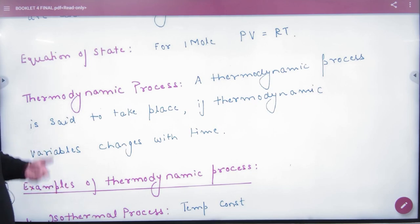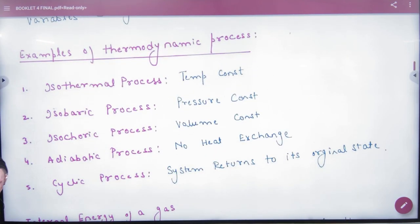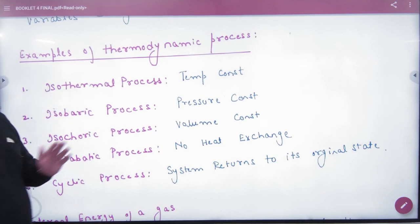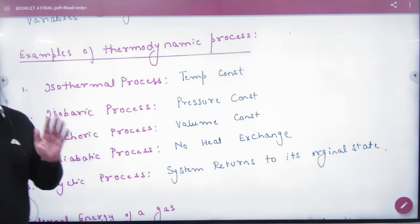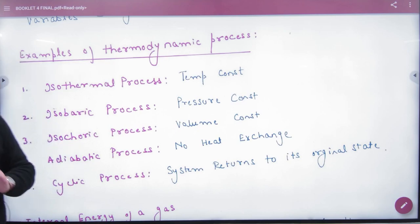Examples of thermodynamic processes. The first type of process we will study is isothermal process. Isothermal process is a process in which temperature remains constant. Next is isobaric process, in which pressure remains constant.